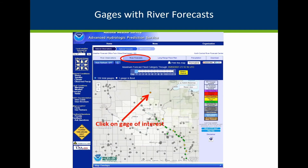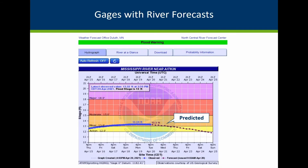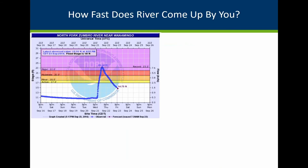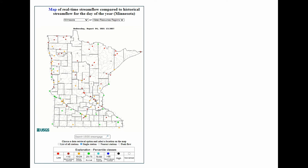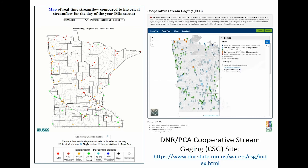The river forecasts tab shows just the gauges that show forecasting. Pick your gauge of interest and you'll see what's predicted for the next few days. Get familiar with the type of flooding you have. A smaller, flashier stream can show the river coming up about 12 feet in a matter of hours. But on bigger rivers like the Mississippi, you'll usually have a couple of weeks of warning before hitting the peak flood elevations. Other great places to look for river gauges in Minnesota are the USGS site and the Cooperative Stream Gauging Network site.